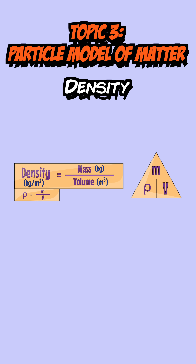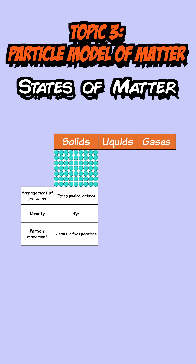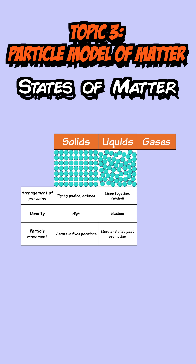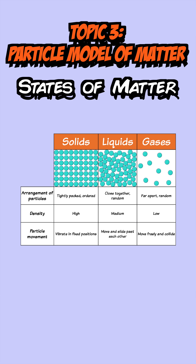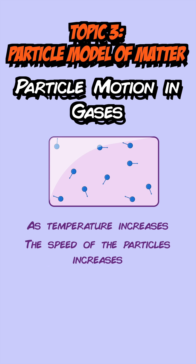The third topic starts with density, where the equation is mass over volume. You can find the volume of an object using a Eureka can by measuring the water displaced by it, then divide mass by that volume to find density. Solids have closely packed particles with a regular structure, liquids also have close particles but an irregular structure, and gases have particles that are far apart and move quickly in random directions. In a gas, particles collide with each other and the walls of the container, creating pressure. As temperature increases, the speed of the particles increases, causing them to hit the walls more often and with greater force, which creates more pressure.